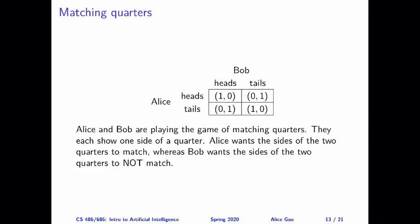Alice wants the sides of the two quarters to match, whereas Bob wants the sides of the two quarters to mismatch. From the payoff matrix, the utility matrix, you can see that if the two quarters have the same sides — so either both heads or both tails — then Alice is happy and Bob is not. Whereas if the two sides are different, then Bob is happy and Alice is not.